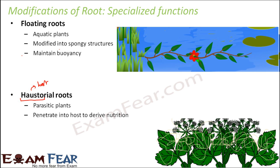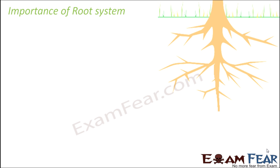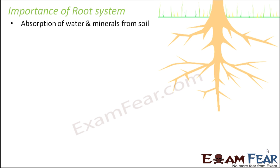So these are some of the specialized modifications of root where roots can perform photosynthesis, roots can help the plants to float, and roots can also help in deriving nutrition from a host. Based on what we have studied about root — what is root, what are the different parts, types, and modifications — we can say that besides the primary functions, roots also help in performing many special functions. Some of the primary functions are absorption of water and minerals from the soil.